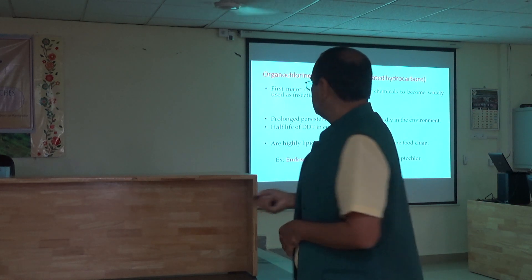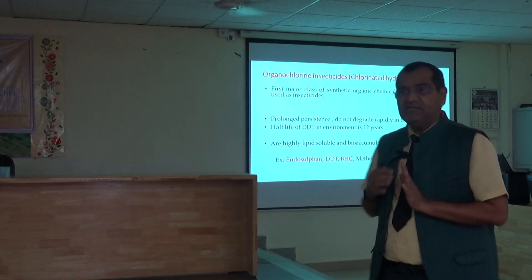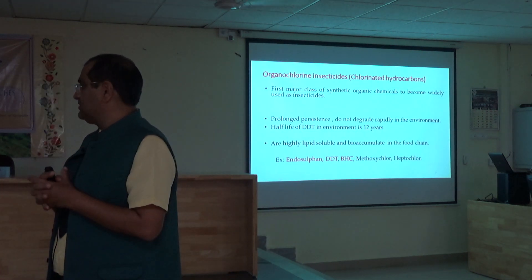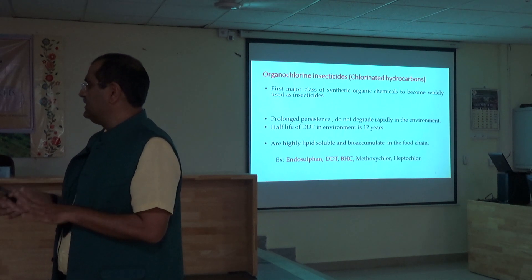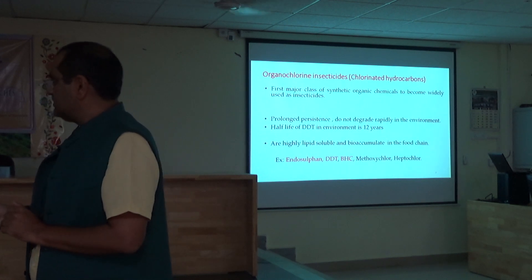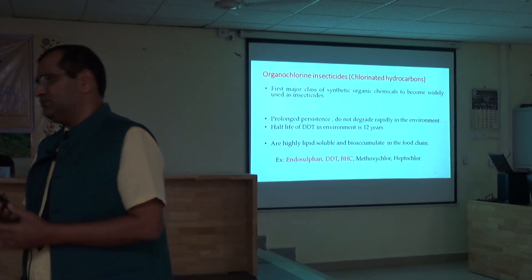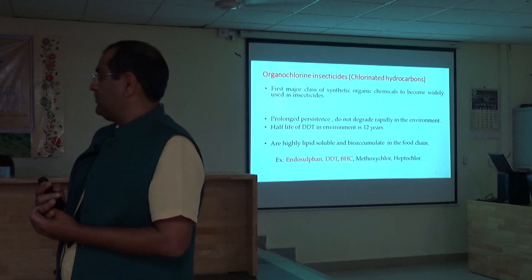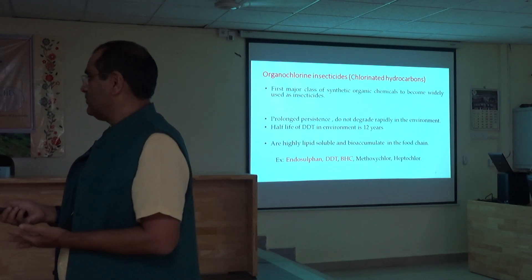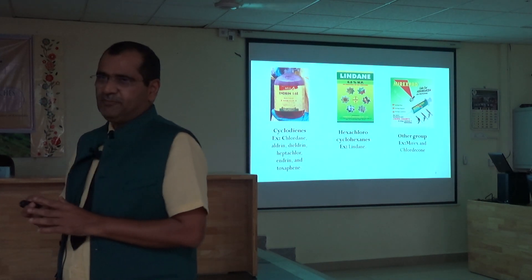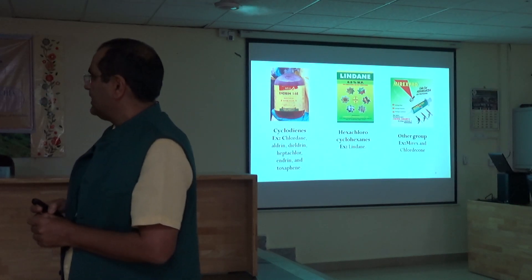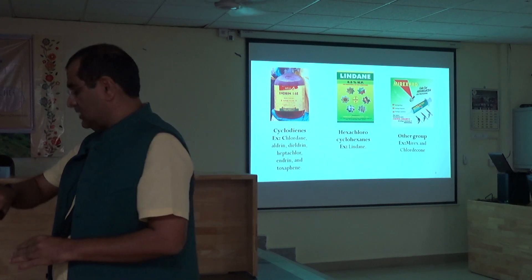OPC compounds stay in soil with a half-life of 12 years. Most organochlorine pesticides — endosulfan, DDT, and BHC — have been banned and are not officially used in field conditions, but they are still available in the market. Please look at these bottles so you can easily classify them as cyclohexanes or organochlorine compounds.